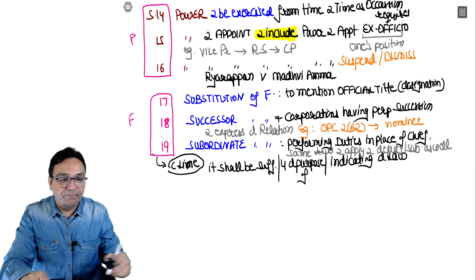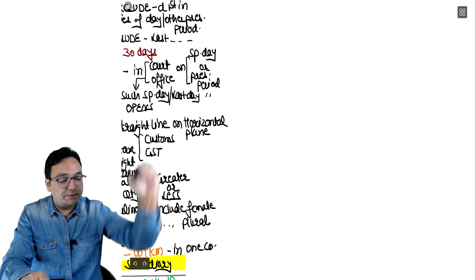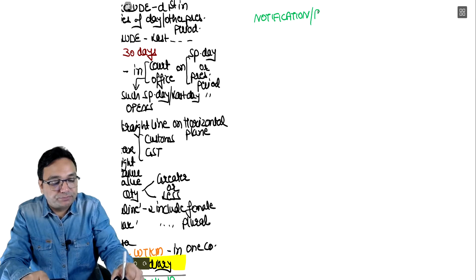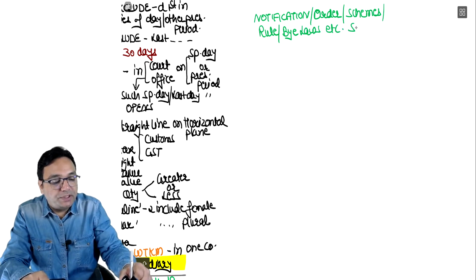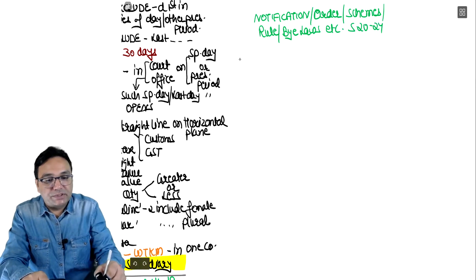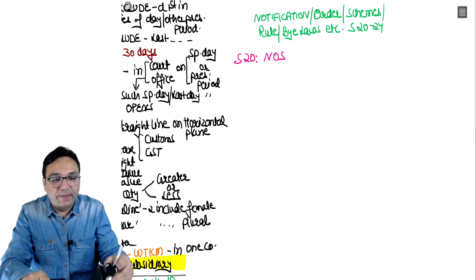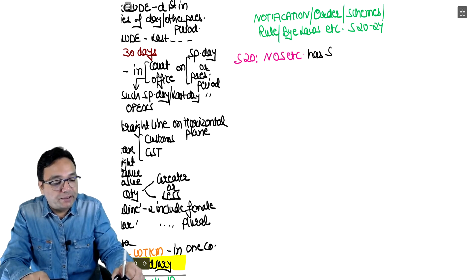We are moving to the next question - sections 20 to 24 - covering notification, order, scheme, rule, bylaws, etc. Section 20 says notification, order, scheme, rule, bylaws, etc. have the same meaning as an enactment - they are part of law. Section 21 says if you have the power to issue notifications etc., you also have the power to amend, vary, alter, rescind, or cancel them.